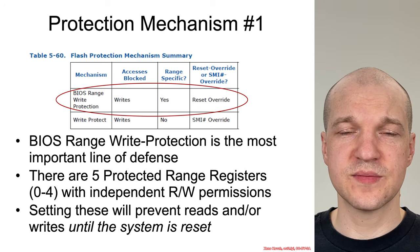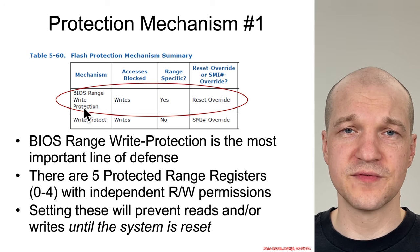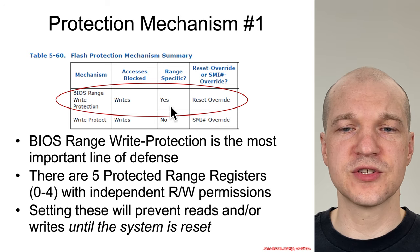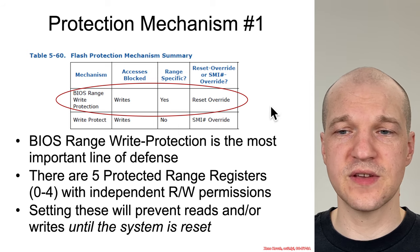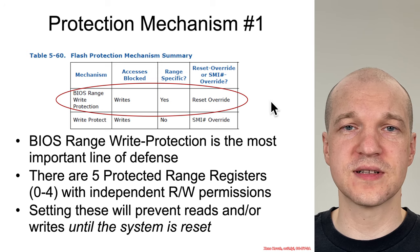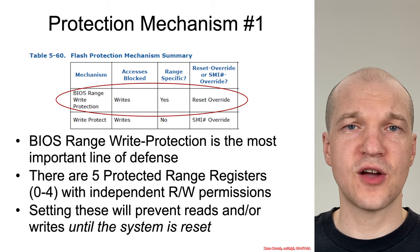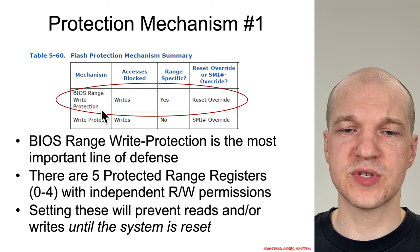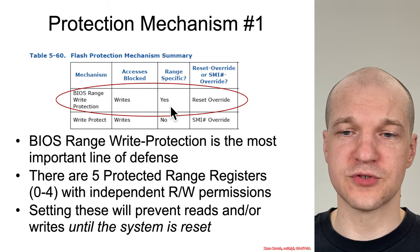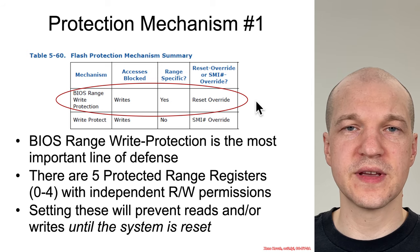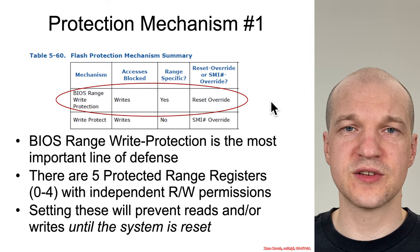There are two main flash protection mechanisms, which Intel outlines in this convenient little table here. First, we're going to talk about the BIOS range write protection, which blocks writes and is range-specific, and has a reset override, meaning that when you restart the system the protection will go away. Intel outlines two main forms: a BIOS range write protection and a general write protection — one of which is range-specific, and the other which is not.